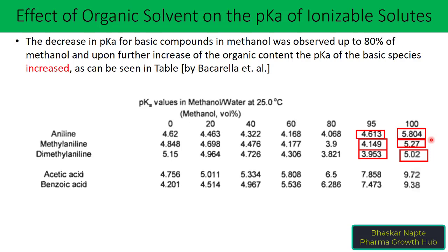Similar observations are found for two other compounds. However, no such trend is observed for acidic compounds like acetic acid and benzoic acid. As stated, the strength of an acid gets decreased in the presence of organic solvent, meaning the pKa value of an acid should increase with increasing organic content in the mobile phase, and you can see the same trend from 0% to 100% methanol.